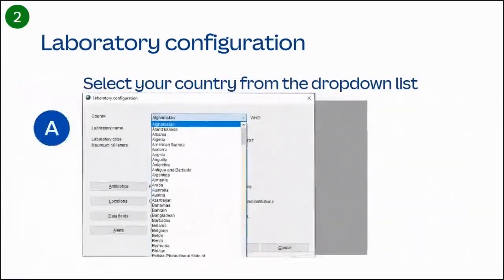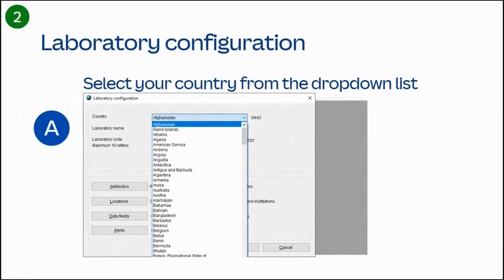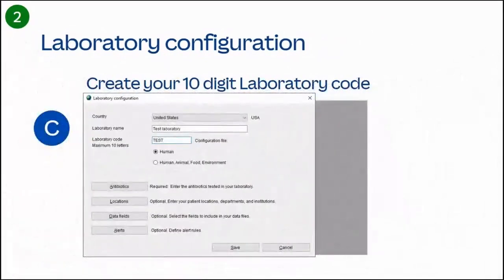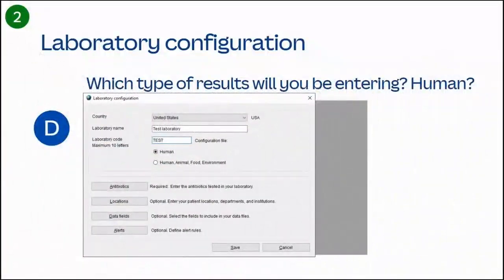For field number one, Country, please select your country from the drop-down menu list. For field two, Laboratory Name, please enter your laboratory name. For field three, Laboratory Code, please select your four-digit to ten-digit code that will represent your facility. Note that this can always be changed.